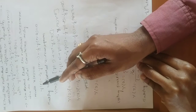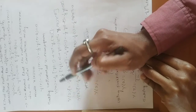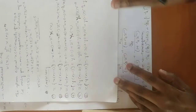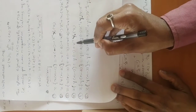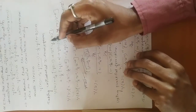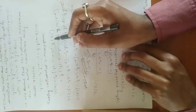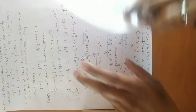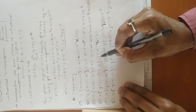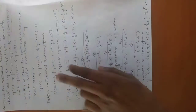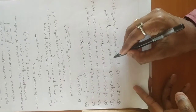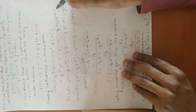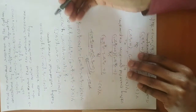Taking the unilateral Z-transform: y(n) becomes Y(z), and y(n-1) is replaced by y(-1) + z⁻¹·Y(z). For y(n-2), the replacement is y(-2) + y(-1)·z⁻¹ + Y(z)·z⁻². These are just replacements using the corollaries.